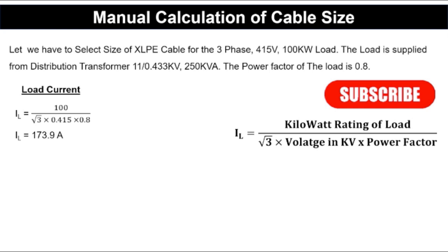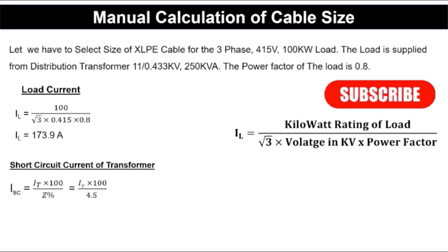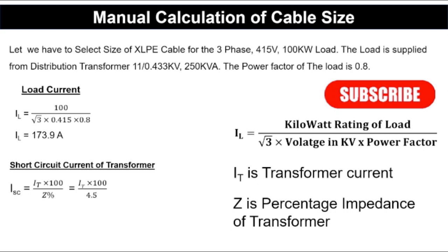The formula for short circuit current rating is: ISC = IT × 100 / Z%, where Z% is the percentage impedance of the transformer. Here we have taken Z% = 4.5. The percentage impedance of a transformer generally varies from around 4%. You can get these values from the manufacturer or from the ETAP library, but here we have taken 4.5.